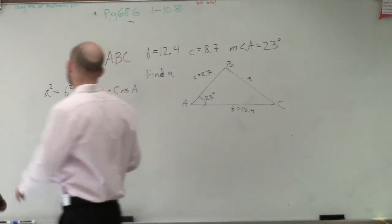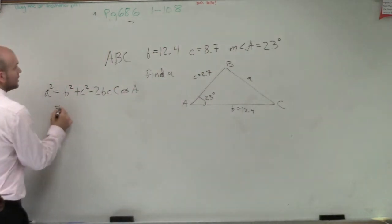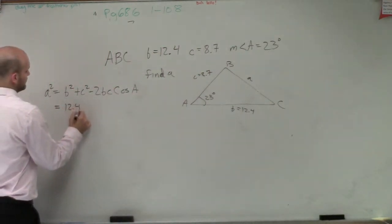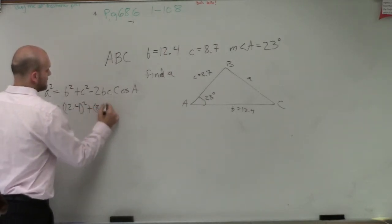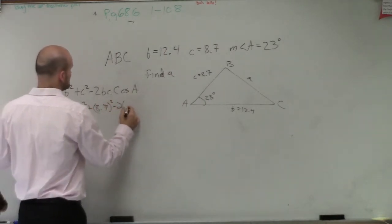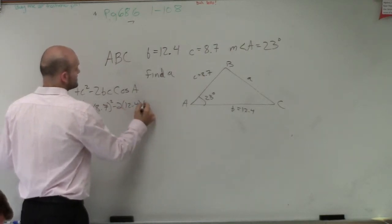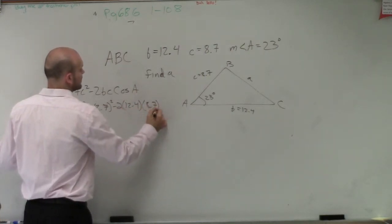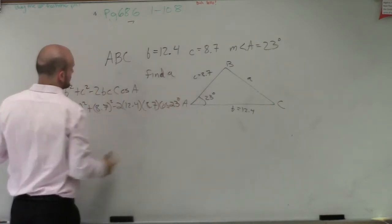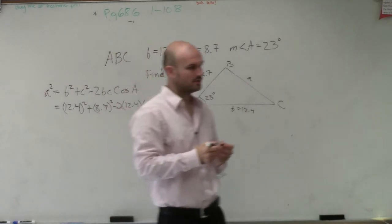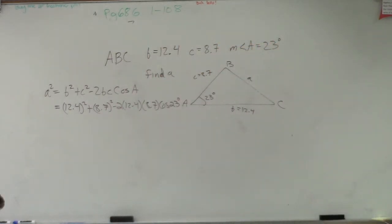So we don't know what a is, but we know b squared is 12.4 plus c squared, which is 8.7, minus 2 times b times c times the cosine of 23 degrees. Let's just do these separately, and then we'll add them all up together.